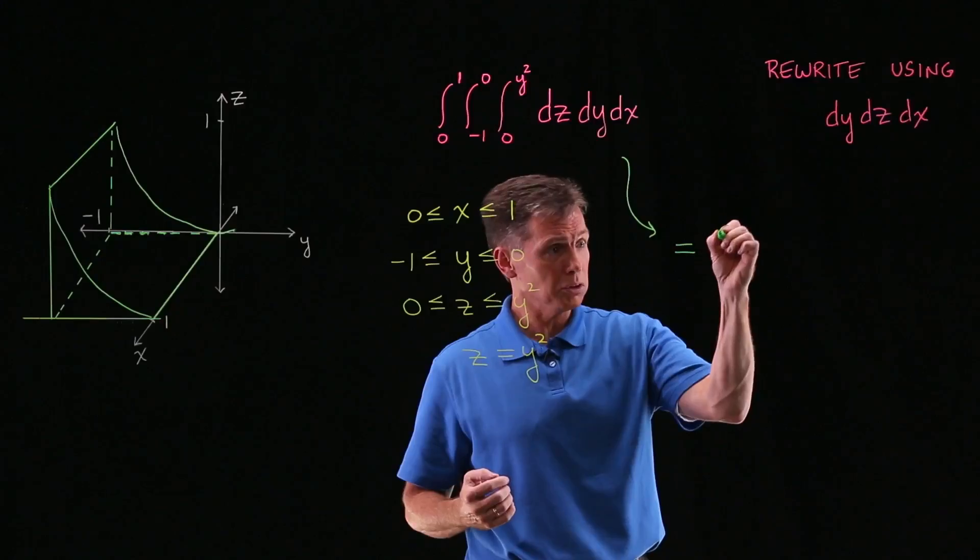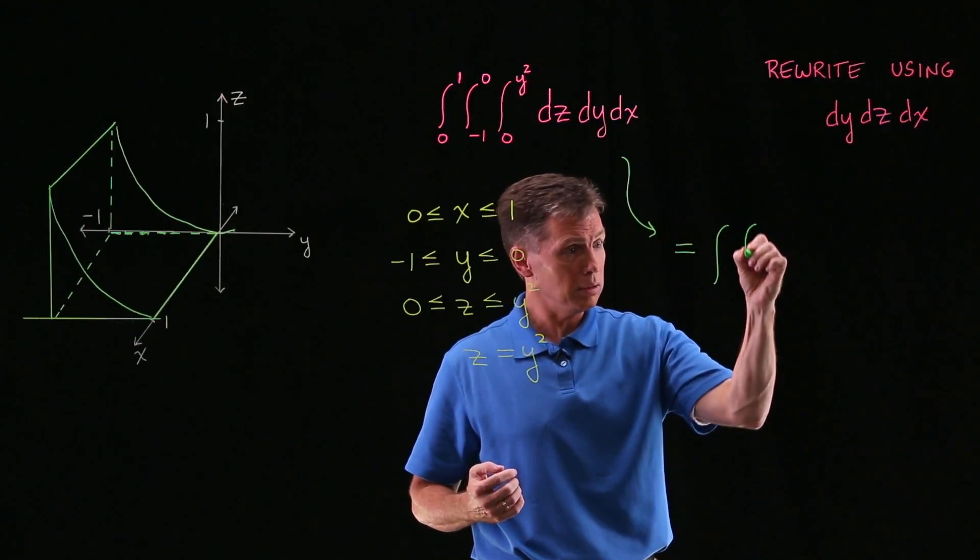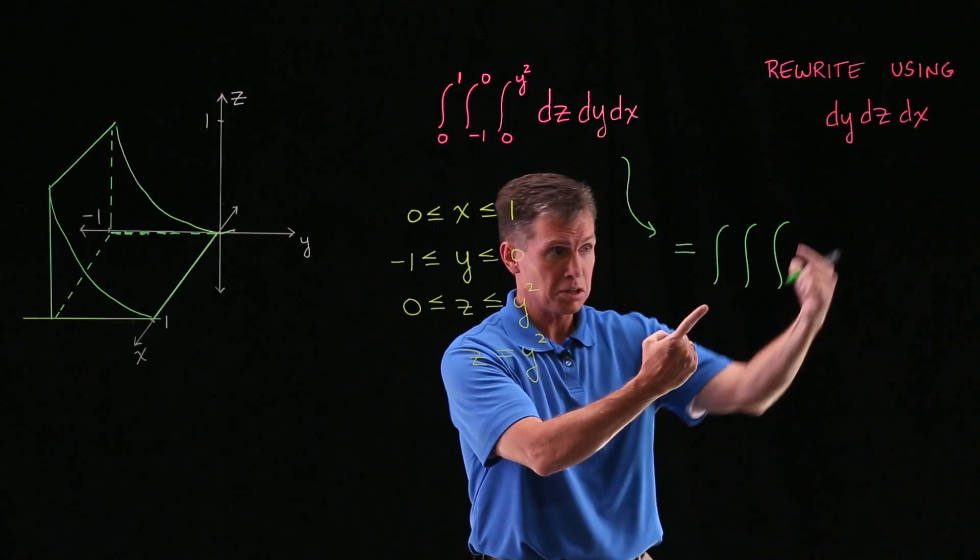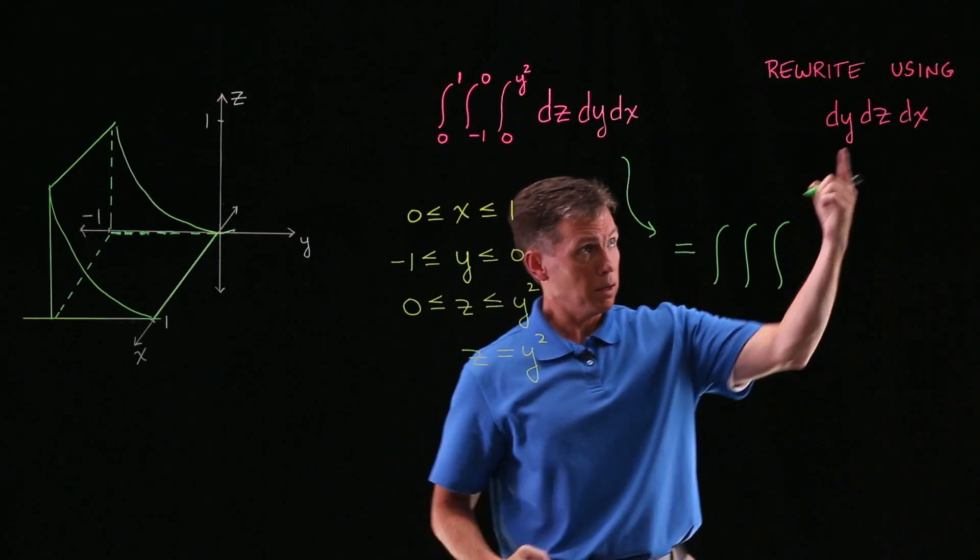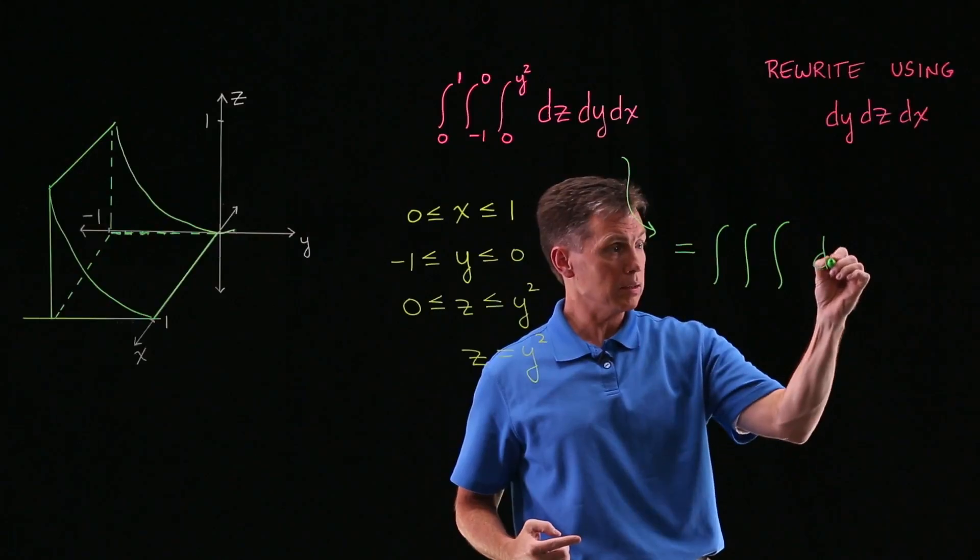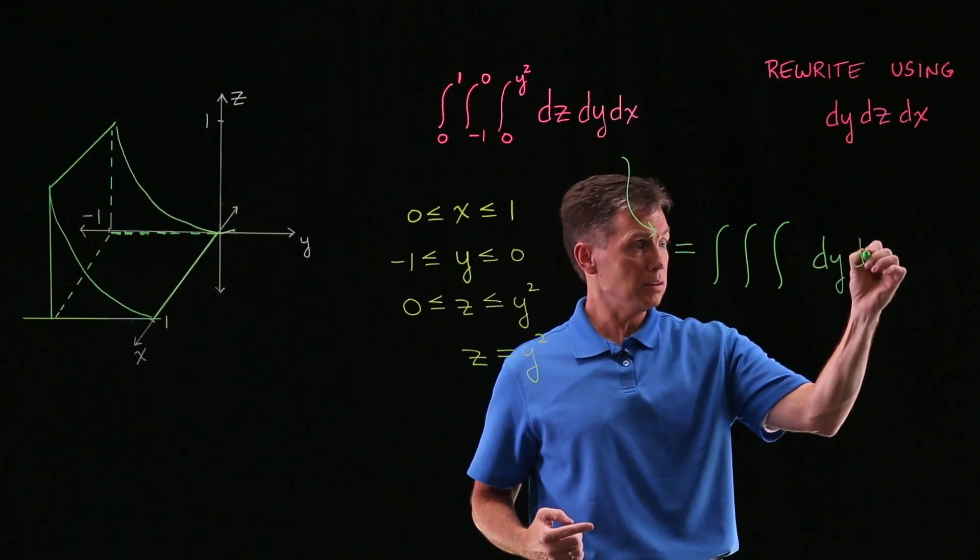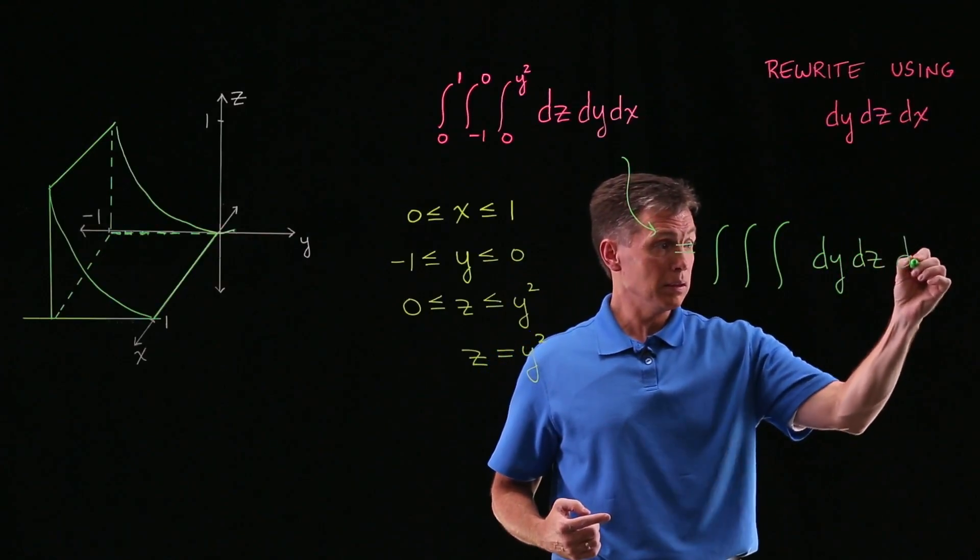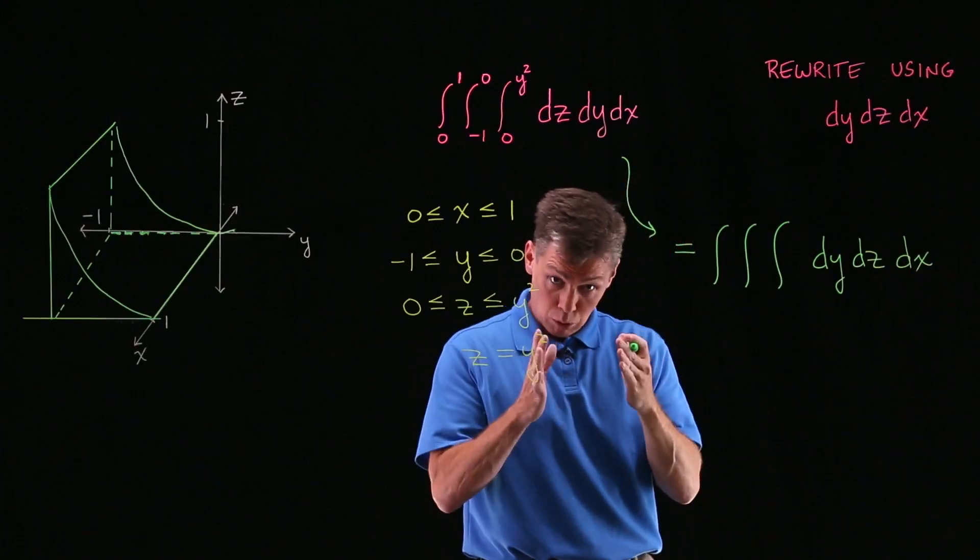So this is still going to be a triple iterated integral, but let me leave the limits of integration blank for a second, and then throw in that dy, dz, dx that they gave me. And now I go in order.